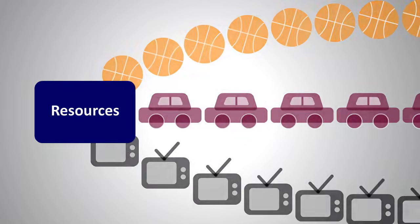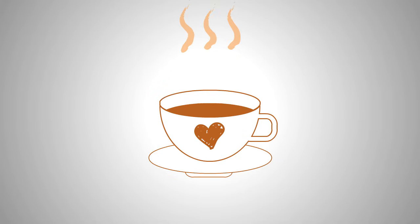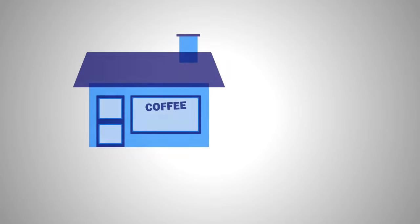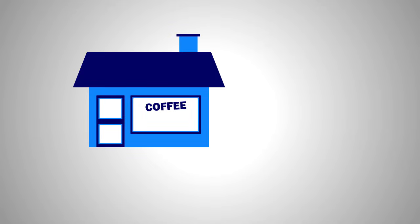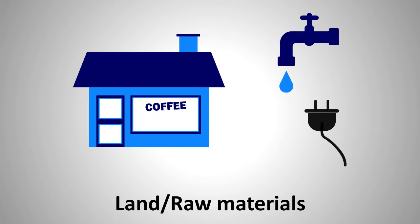Suppose you want to sell awesome coffee to people. What do you need? Maybe a cafe? So you got to rent some place. That's land, isn't it? You also need water and electricity, and of course, coffee beans. What are these? Raw materials.